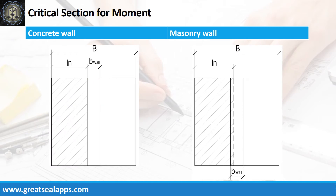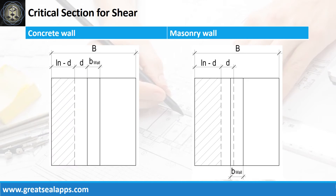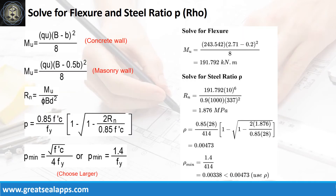Critical section diagrams for moment evaluation and critical section diagrams for shear evaluation are shown. Given ultimate soil pressure equals 243.542 kPa, footing width equals 2.71 meters, and concrete wall thickness equals 200 mm, the maximum moment is 191.792 kN·m per meter.